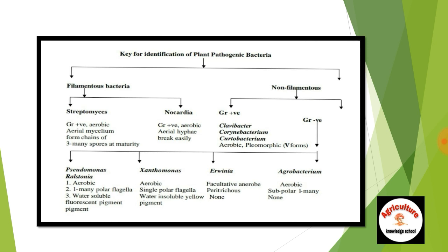Bacteria are classified into filamentous and non-filamentous bacteria. Filamentous bacteria are further classified into Streptomyces and Nocardia. Streptomyces is gram positive, aerobic, forms aerial mycelium, and chains of many spores at maturity. Nocardia is gram positive, aerobic, forms aerial hyphae that break easily. Non-flagellate, non-filamentous gram positive bacteria include Clavibacter, Corynebacterium, and Arthrobacter — aerobic, pleomorphic, V-form bacteria.